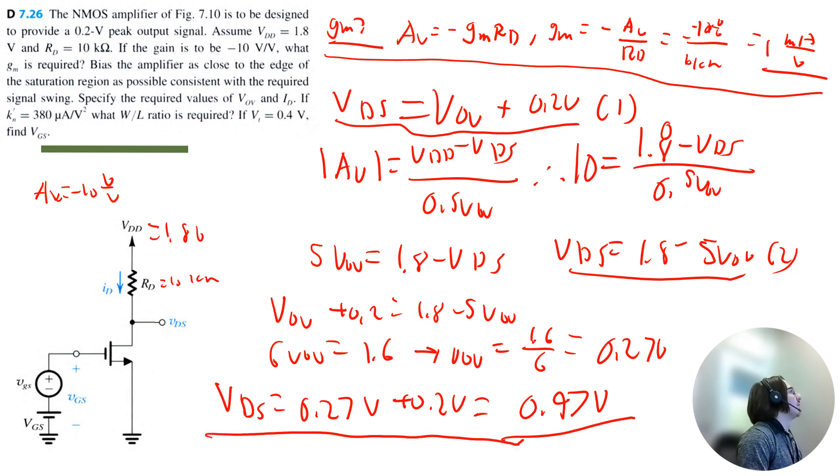So basically what I did is we needed to bias the amplifier to get as close to saturation. So I knew I had to find my V overdrive because it relates to VDS. And I had to add the 0.2 volts because that is the output signal that we were trying to get. So then I just used a gain equation to solve for V overdrive. Let me clean up this a little bit and we will solve the rest of the question.